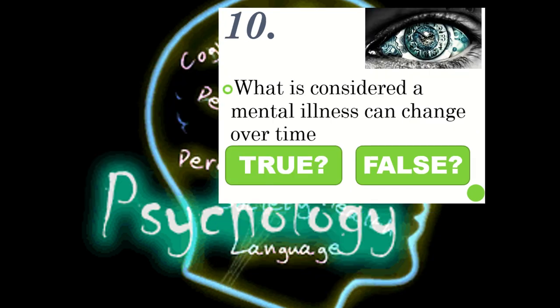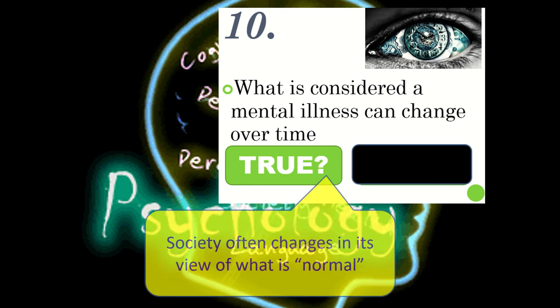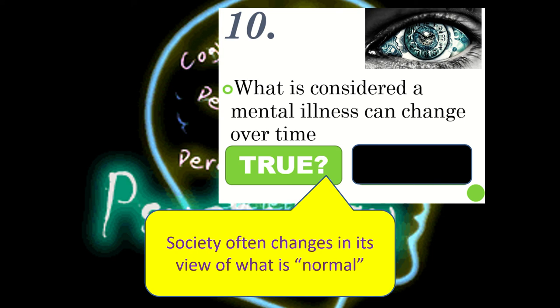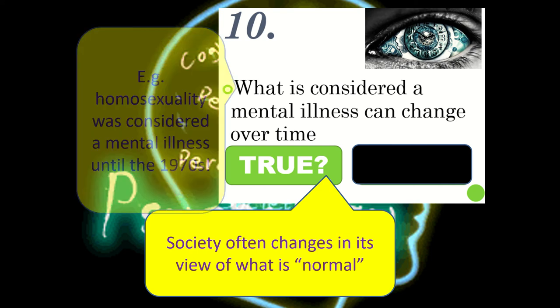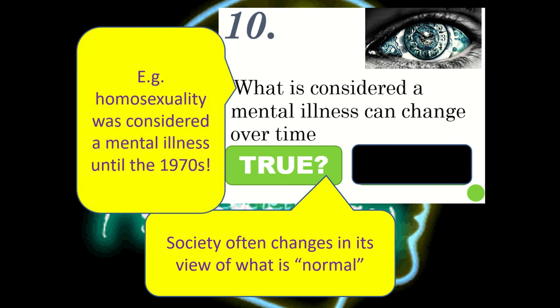And lastly, statement 10: what is considered a mental illness can change over time — and this is true. Did you know that society often changes its mind on what it considers to be normal and abnormal? For example, prior to the 1970s, if you were openly homosexual you could actually potentially be diagnosed with a mental health issue and institutionalised. So our views of mental illness do change significantly over time. Give yourself a mark out of 10 and let's see how much you know about psychopathology before we get going with the bulk of our task today.